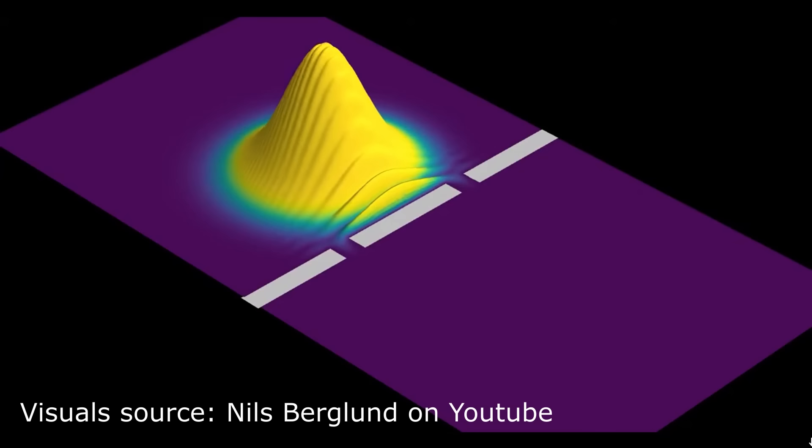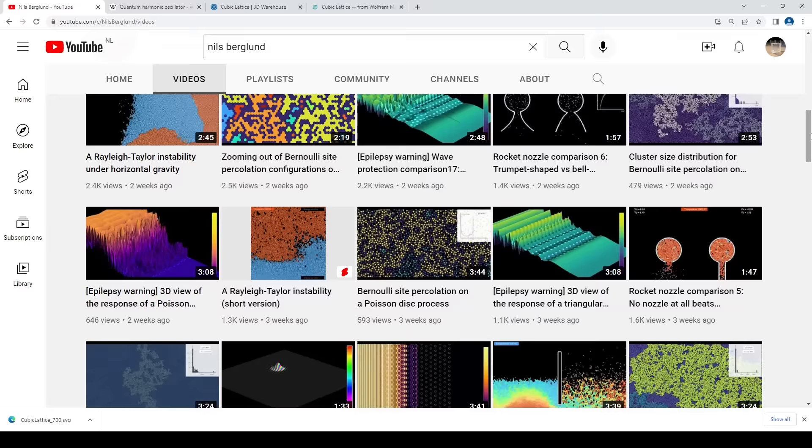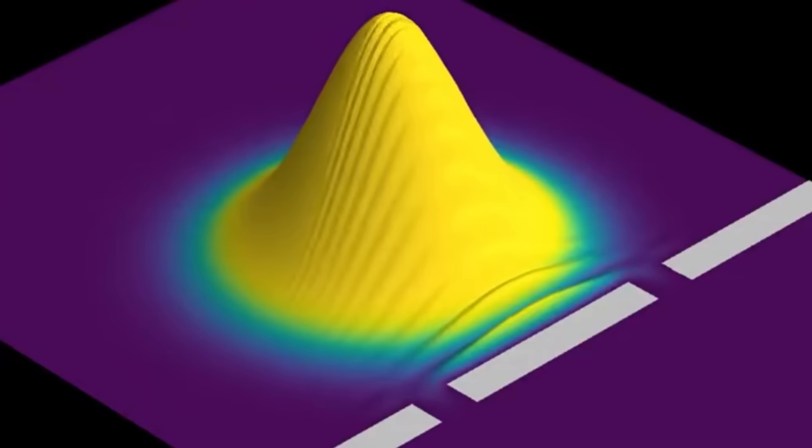Here is a simulation of how a quantum particle behaves in terms of probability when faced with a couple of choices. The simulation was done by Niels Berglund, who runs a really great YouTube channel where he showcases all kinds of physics simulations. It is definitely worth taking a look at this channel if you are into visual representations of physical phenomena.